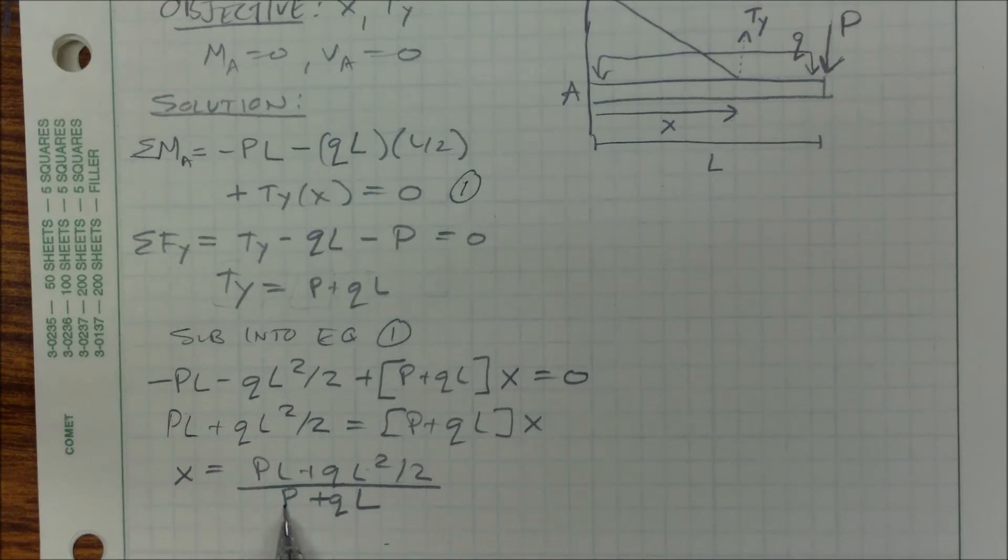And on the bottom, I have force plus force over distance times distance, which is also force. So overall, the top I have force times distance, and the bottom I have force, so my units would end up being length or distance, which is exactly what I expected.